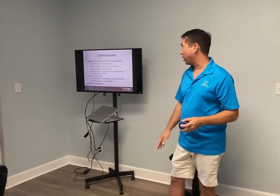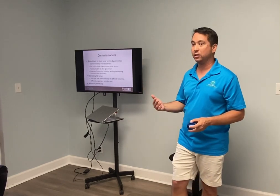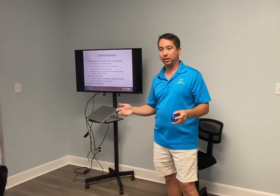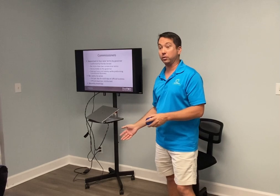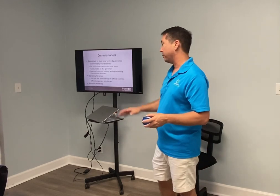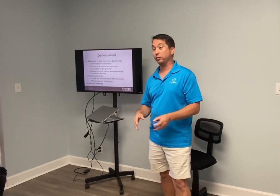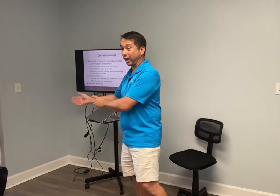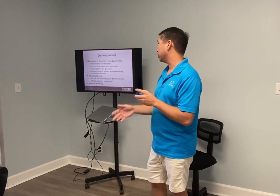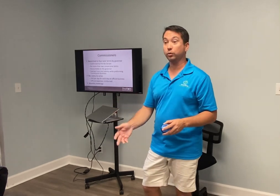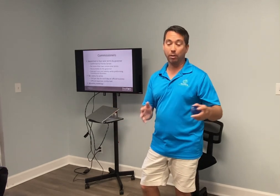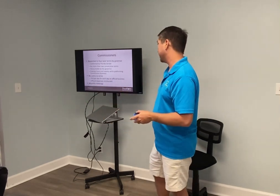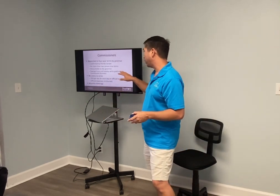Commissioners are appointed by the governor and confirmed by the Senate. They can serve no more than two consecutive terms, just like governors. The difference is a commissioner can serve two consecutive terms, then sit out a term and go back again — you just can't have more than two consecutive terms in a row. They're not all appointed at the same time so you don't turn everyone over at once.